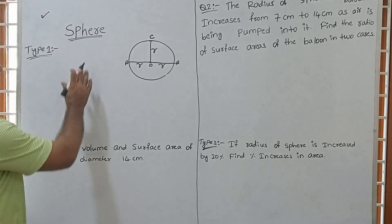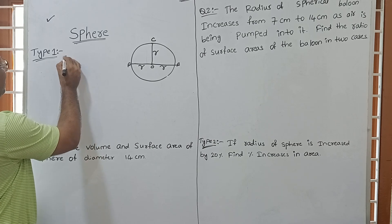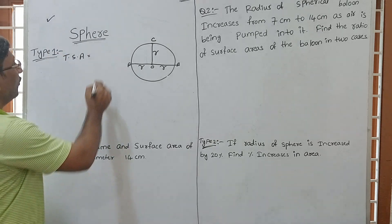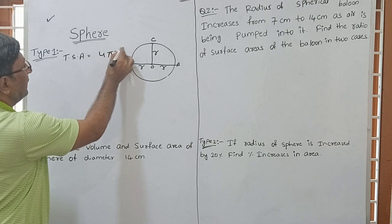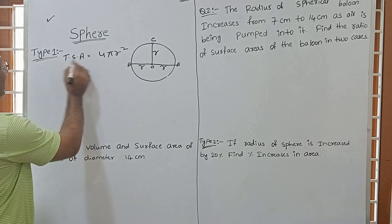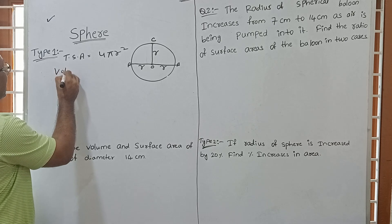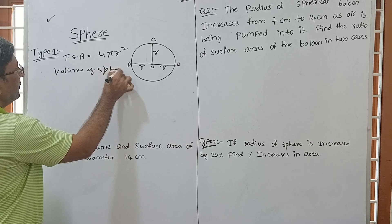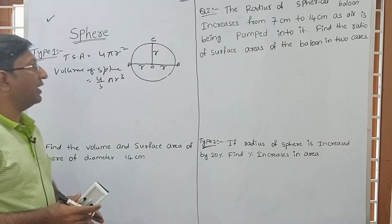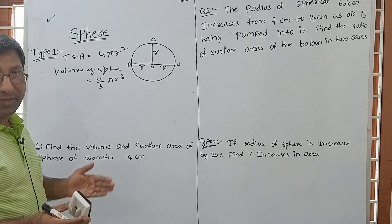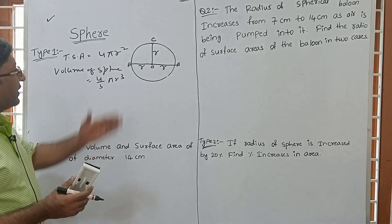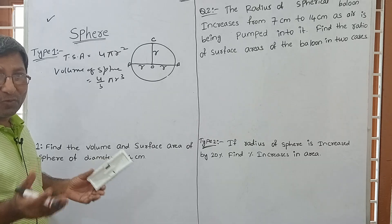AB will be the diameter. So what is the basic formula in the Sphere? The total surface area of a Sphere is 4πr², where π is 22/7 or 3.14. And the volume of a Sphere is 4/3 πr³. These two are the basic formulas for a Sphere.